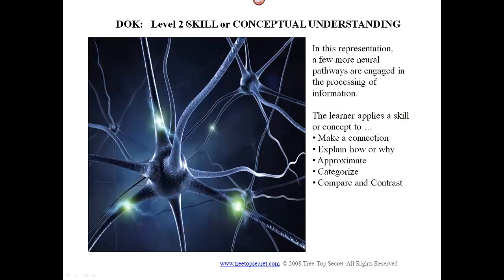At level two — skill or conceptual understanding — we have a representation where there are a few more neural pathways being engaged in the processing of information. The learner is applying a skill or concept to make a connection, to explain how or why, to approximate, categorize, compare, and contrast.